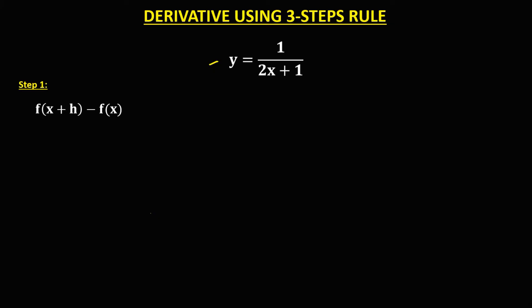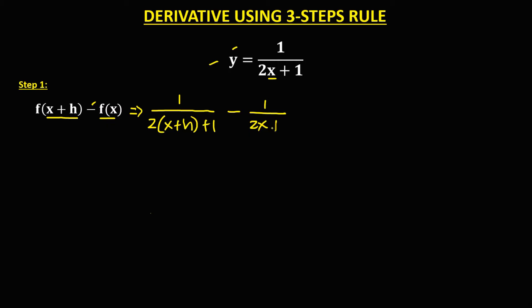Step 1: using the formula f of x plus h minus f of x. First, substitute x with x plus h. So f of x plus h equals 1 over 2 times (x plus h) plus 1. Then minus f of x, which is the given: 1 over 2x plus 1.